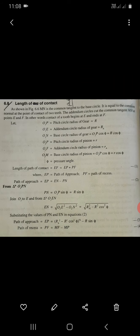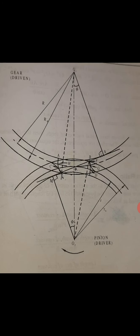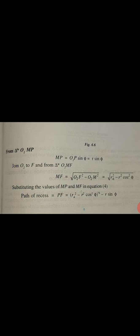Path of recess PF equals MF minus MP. From triangle O2MP, MP equals O2P sin phi, or r sin phi. Join O2 to F. MF is square root of O2F squared minus O2M squared, equals square root of ra squared minus rb squared.